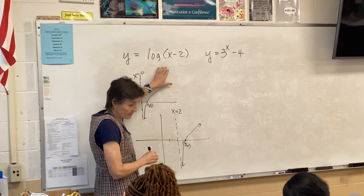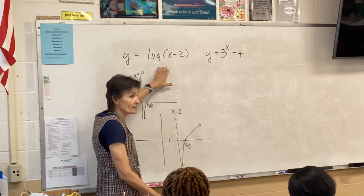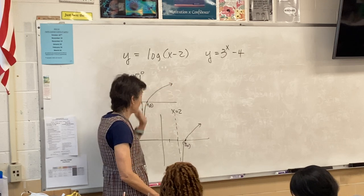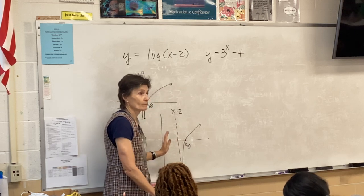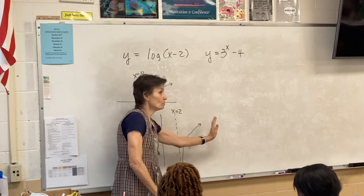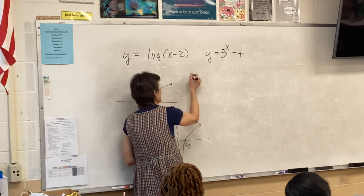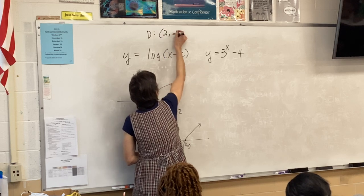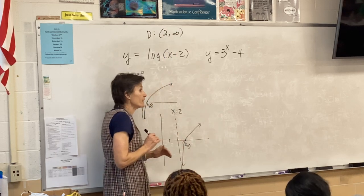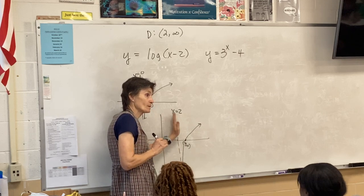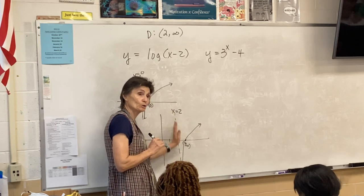Now, what do we need to know? We need to know domain, range, and asymptotes. Okay, so domain is x. Tell me about the x's in this picture. They're bigger than 2. So domain is going to be 2 to infinity. Now, don't include the 2, don't use a bracket, because isn't there an asymptote there? So that's not included.